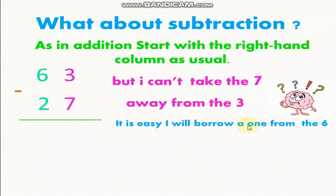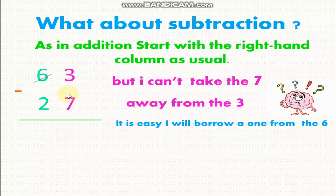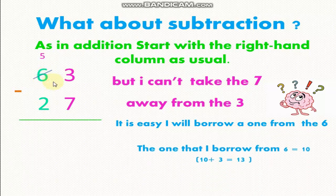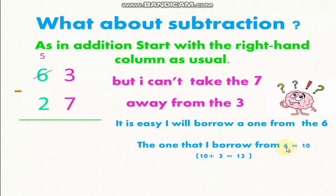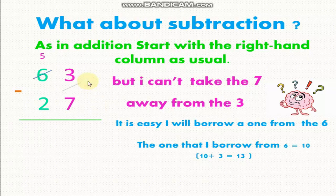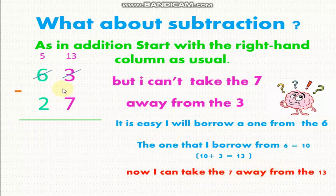It's easy. I will borrow a 1 from the 6. So take 1 from 6. 6 will become number 5, and the one that I borrow from 6 equals 10. 10 plus 3 equals 13. Now I can take the 7 away from the 13. 13 minus 7 equals 6.